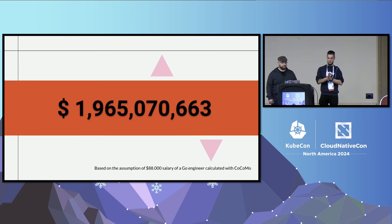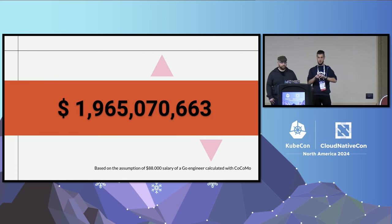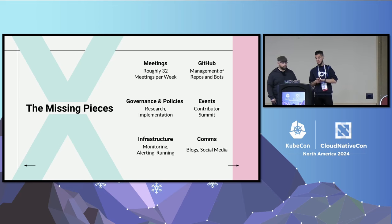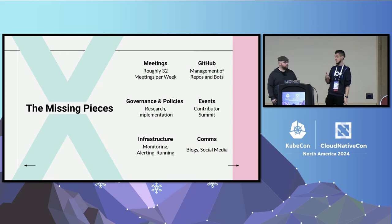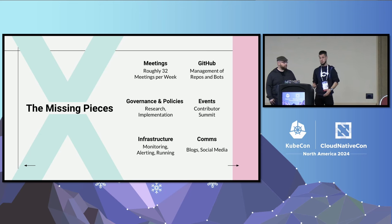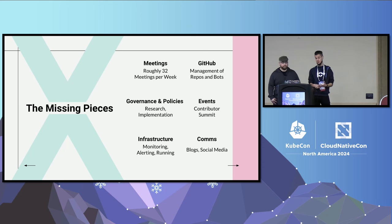But that's only based on the COCOMO method, and we're missing a lot of things when we only look at lines of code. There are a ton of pieces not tracked inside a project — like meetings. When you look at the KDS or DEV calendar, there are roughly 32 meetings per week, with typically five people per meeting. This is also time that needs to be accounted for.